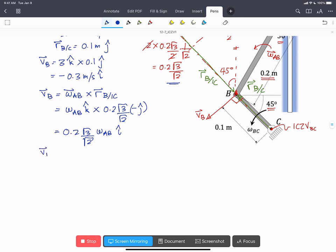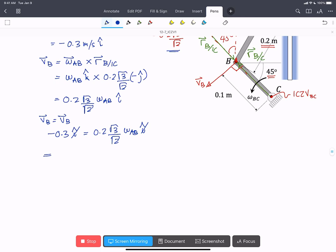Then we set those two expressions for VB equal to each other. We get minus 0.3 in the I hat equals 0.2 root 3 over root 2 omega AB also in the I hat. We'll cancel out those I's.